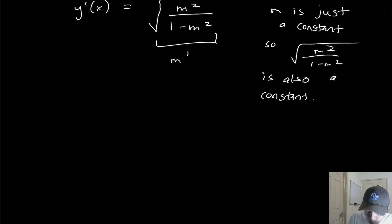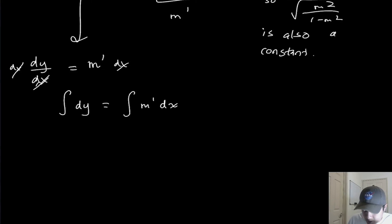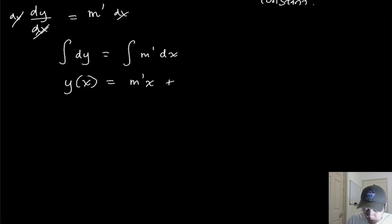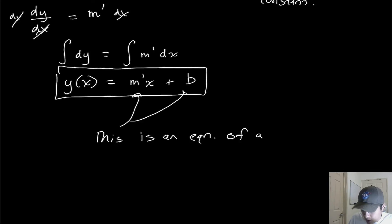One helpful thing to do now is rewrite Y-prime of X as DY/DX, the derivative of Y with respect to X, which equals M-prime. Then we can do separation of variables — multiply both sides by DX and integrate: the integral of DY equals the integral of M-prime DX. So we get Y as a function of X equals M-prime times X, plus a constant of integration B. So Y of X equals M-prime X plus B — this is just an equation of a line.